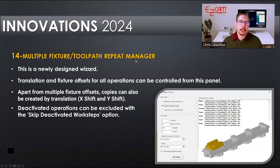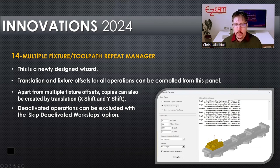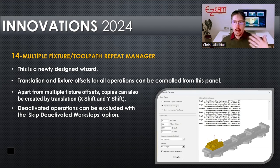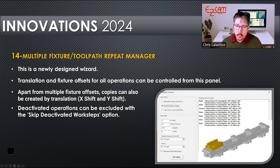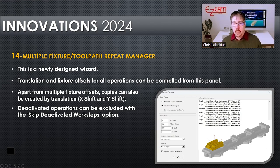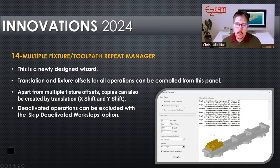The repeat manager: previously you had to go into each work step and each operation to add translations, like we did with the ball end mill, and do that for every work step. With copy from current work step, when you add those translations — say you want them throughout all the parts you're going to machine — that's what copy from current work step will do for you.